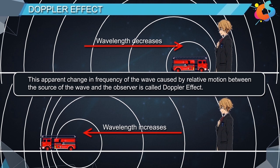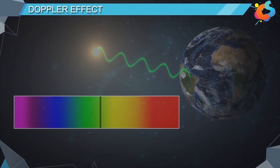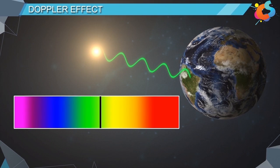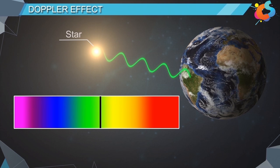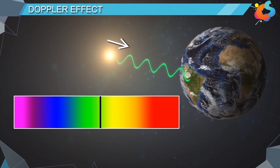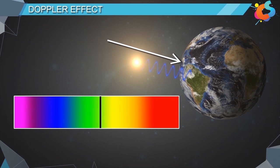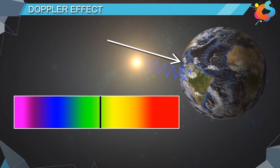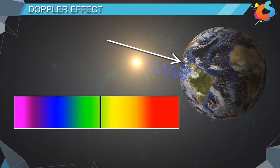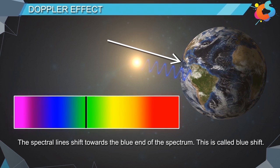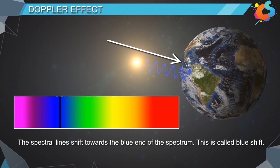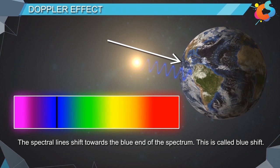Doppler effect has a wide range of applications. It can be observed in light as well. If a star emitting light moves towards earth, then the frequency of the light received by earth increases, or the wavelength decreases. Thus the spectral lines shift towards the blue end of the spectrum. This is called blue shift.